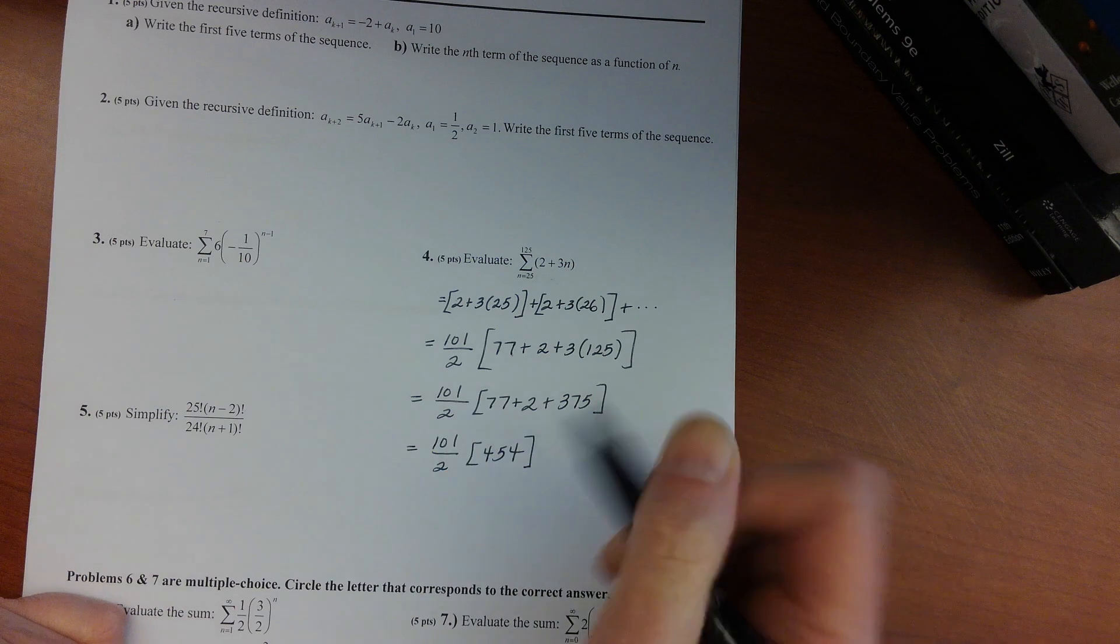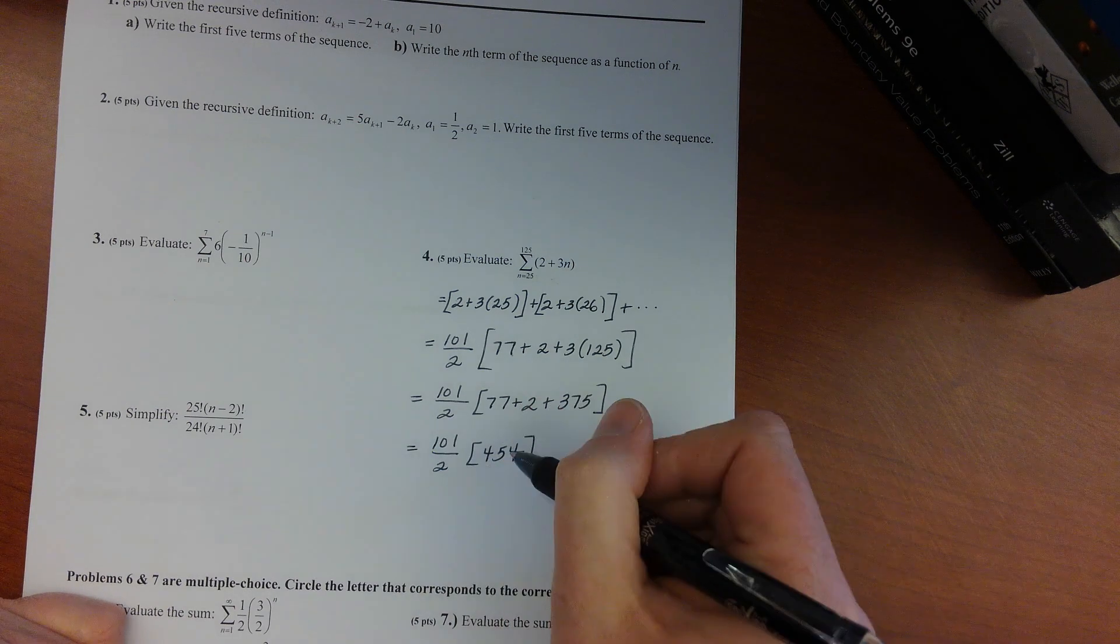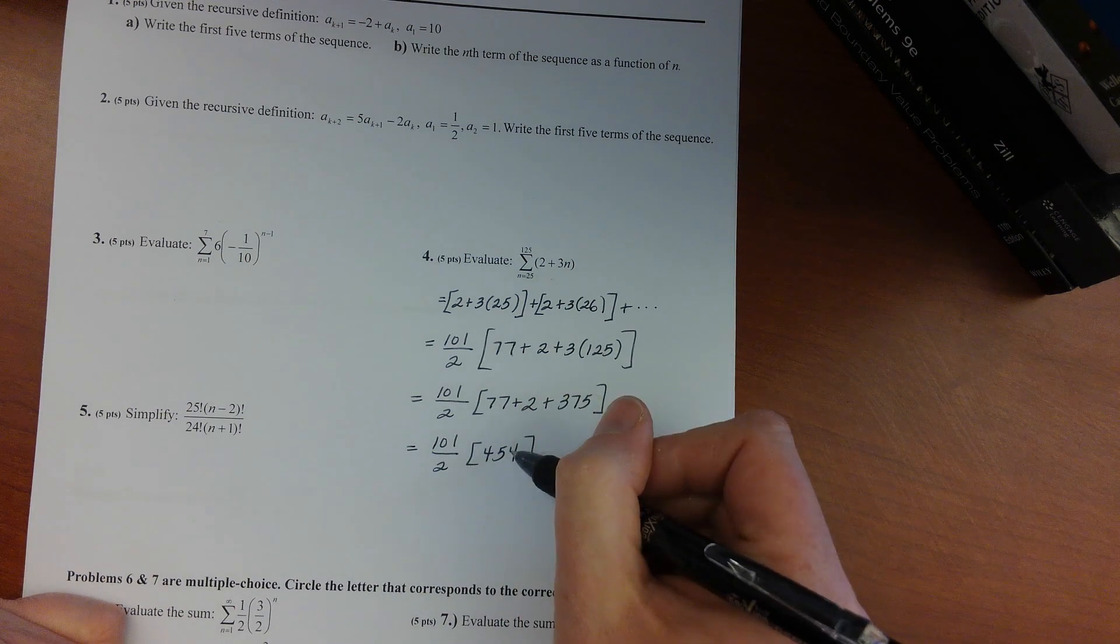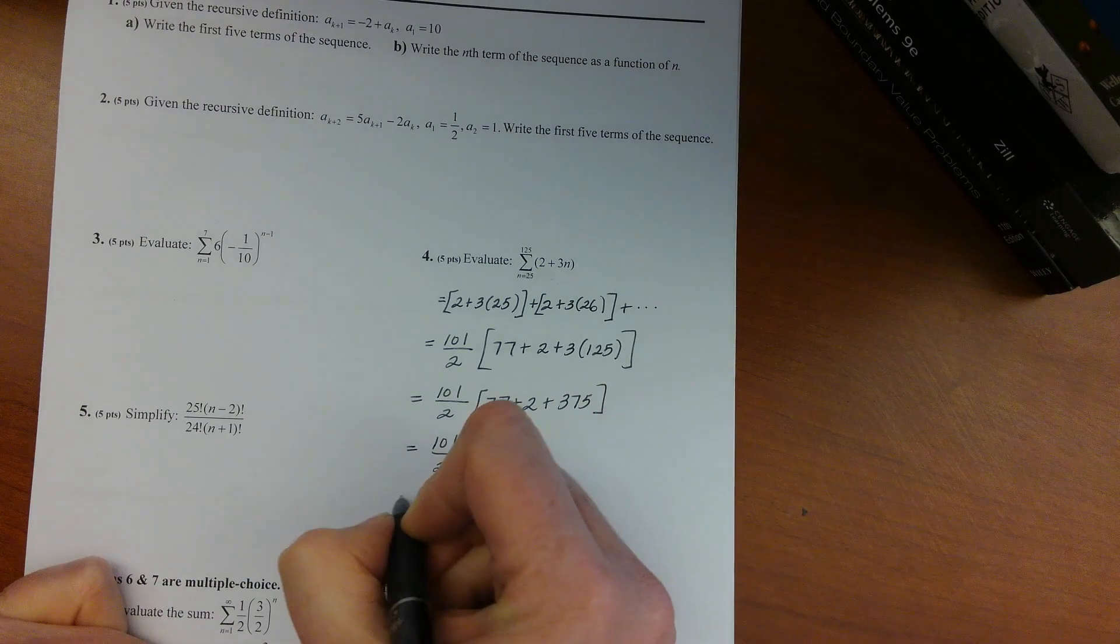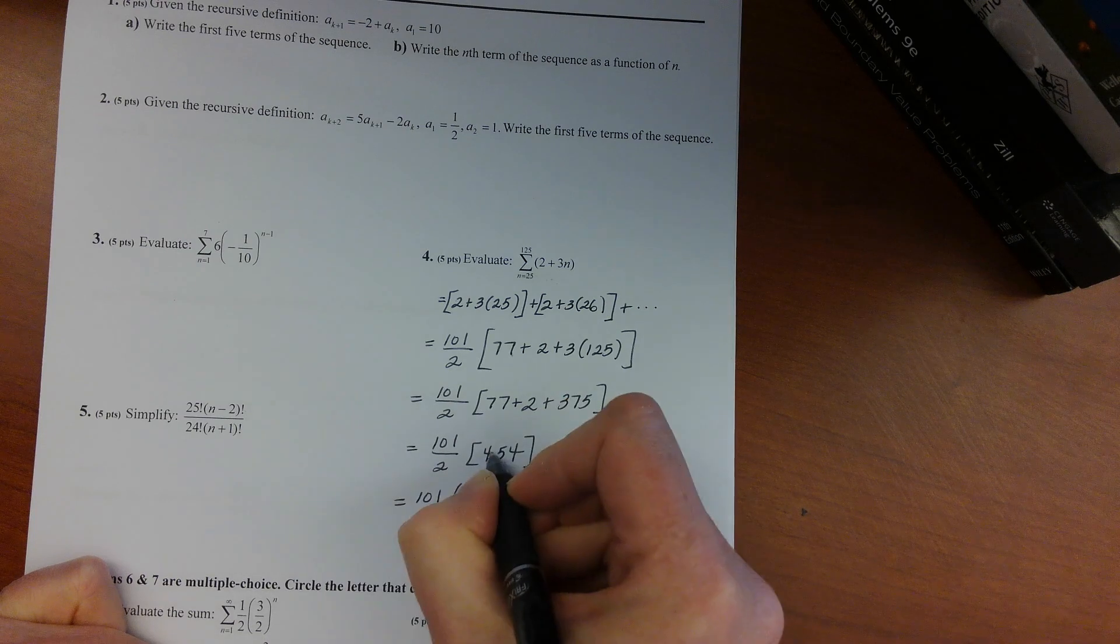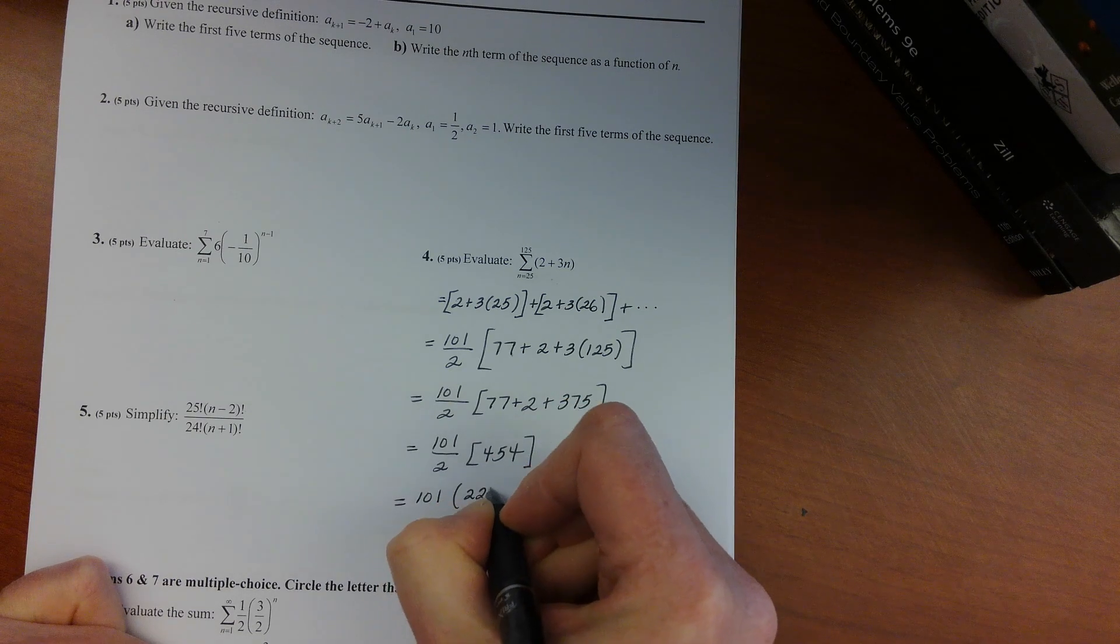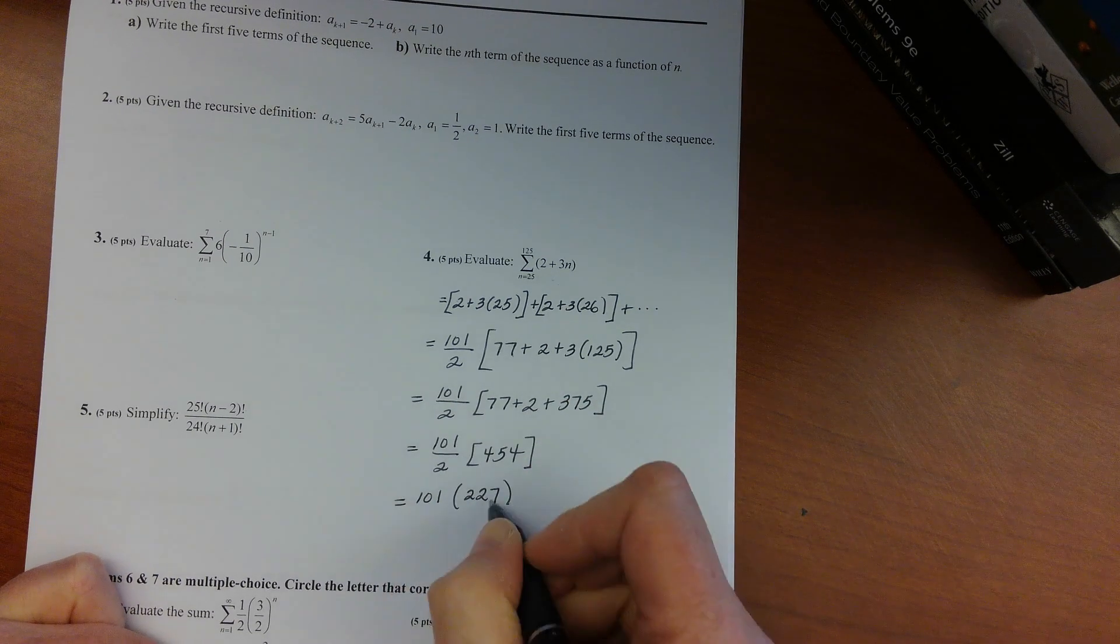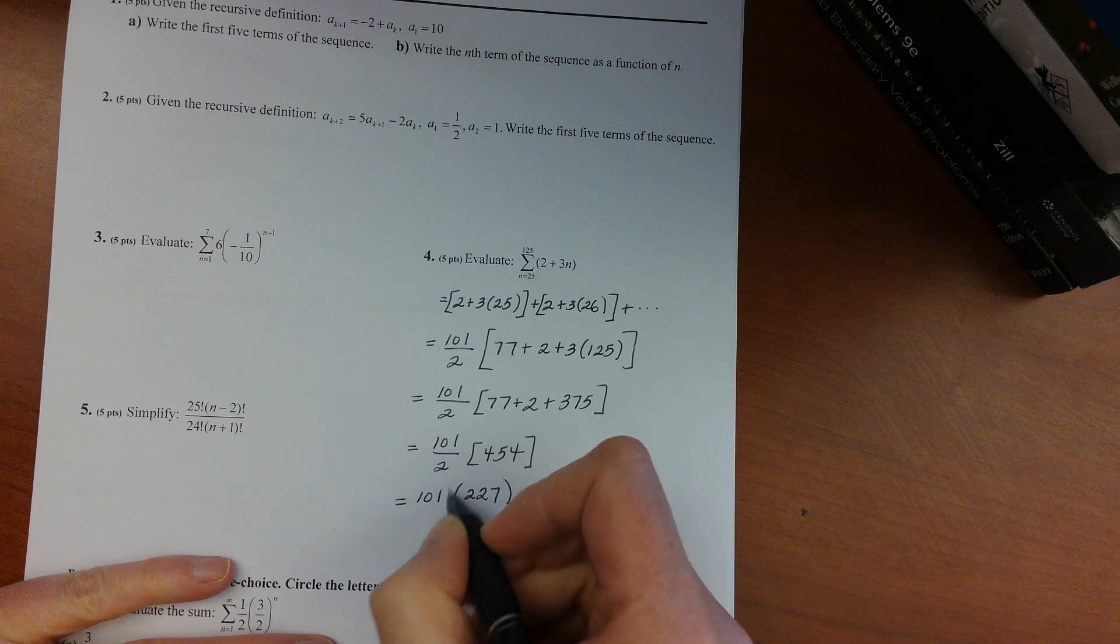Like so, and then I personally would cancel with the 2 and the number that we have in here. So 101 divided by 2 would be 227.